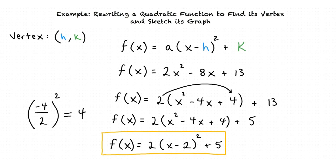Comparing this to the form f(x) = a(x - h)² + k, we find that our vertex is (2, 5).